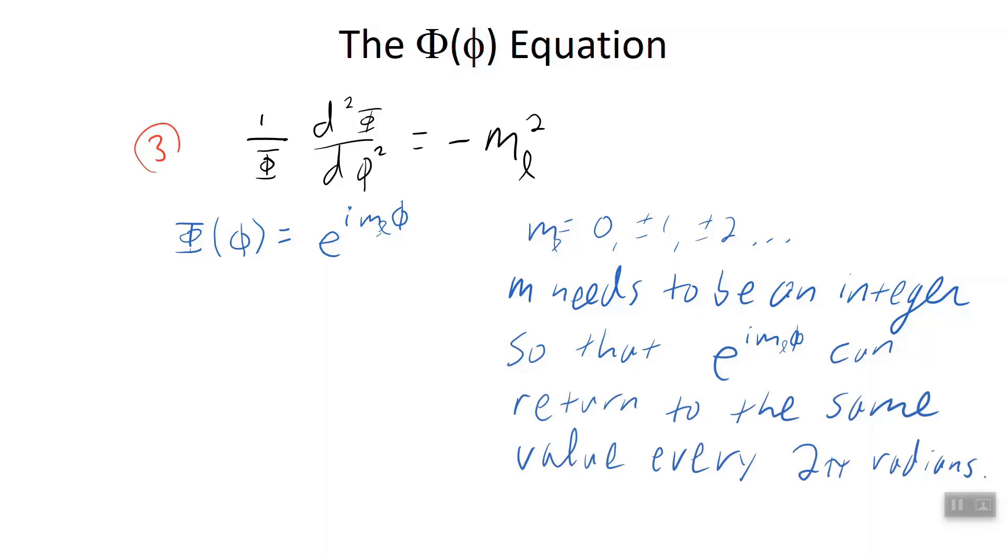It needs to be an integer, which hopefully is fairly evident to you, because if m sub l is not an integer, then the function phi, capital phi, does not return to its own value when the variable, little phi, goes about 2π.